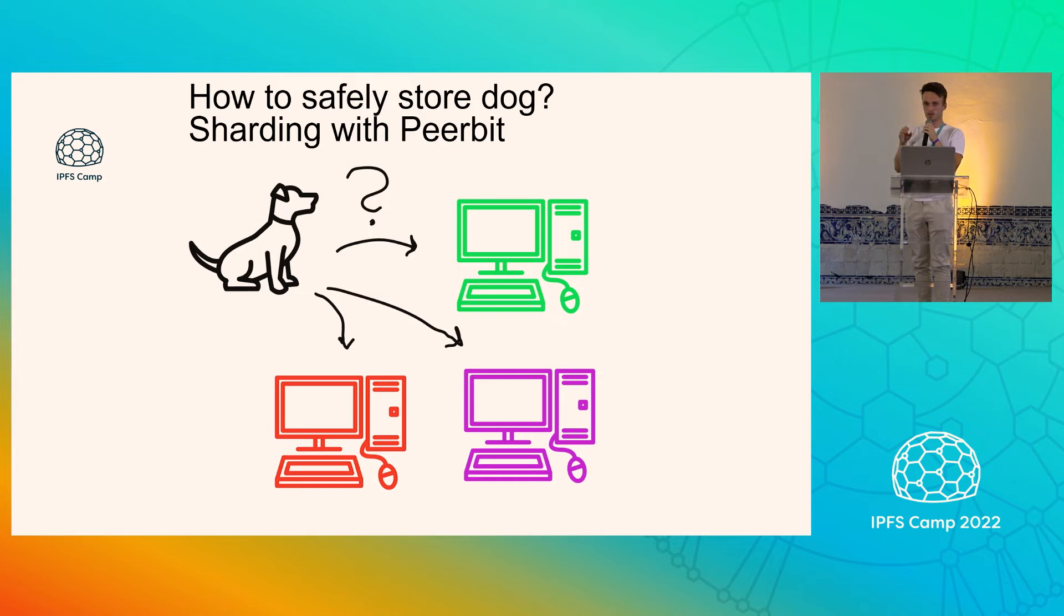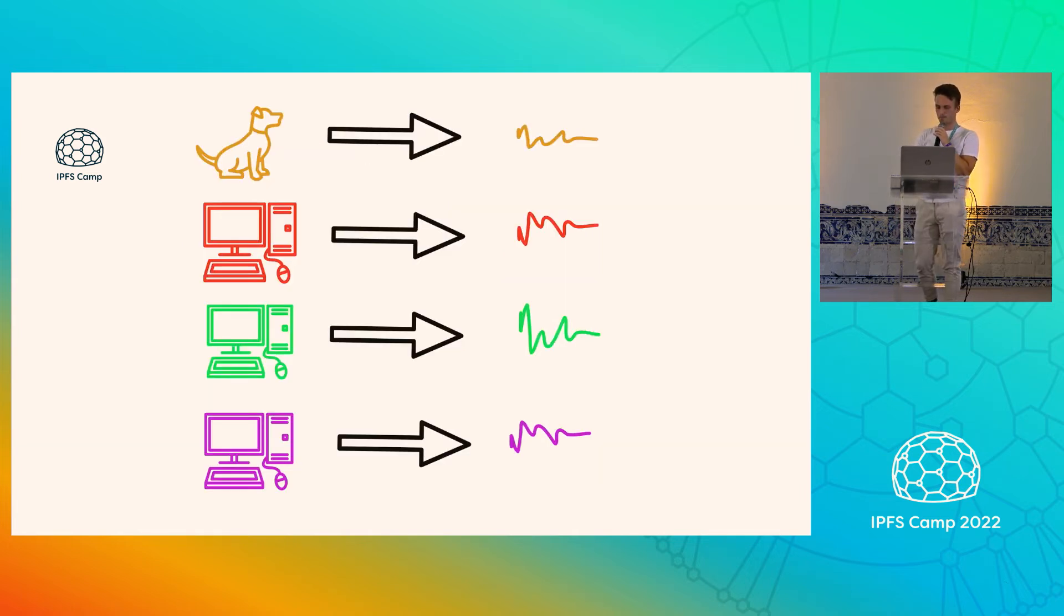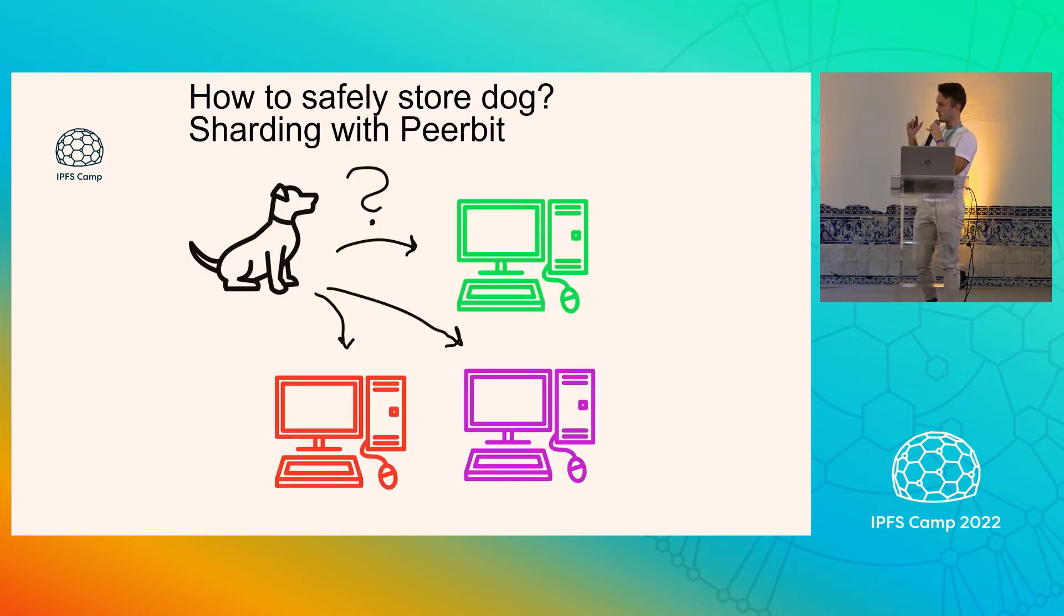How can we make sure that we can find the dog later? How can we make sure that when we ask the computers where is the dog, someone actually replies with the answer? So this comes down to the way that we do data sharding. So basically, we need to make a decision. Where should this content end up? And who is going to be responsible for the indexing of content?